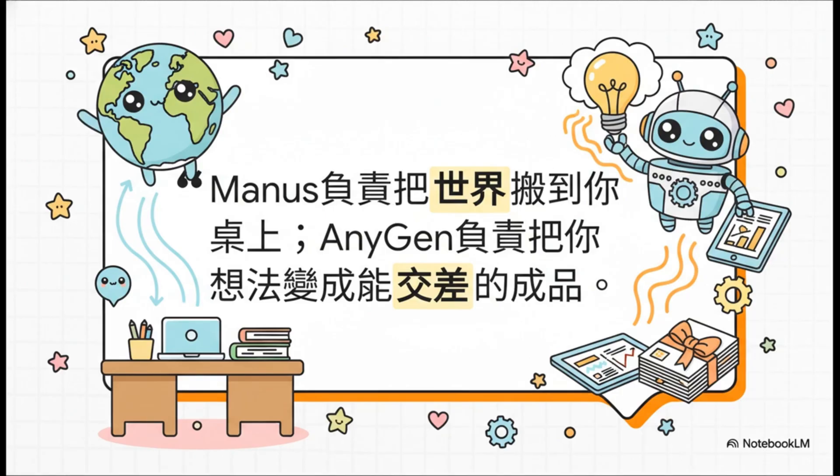这带来了一个全新的黄金级工作流程：你可以先用Manus做深入的研究，然后把研究成果直接丢给Anygen，让他帮你生成一份完美的最终报告。